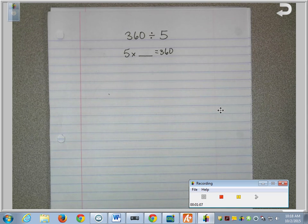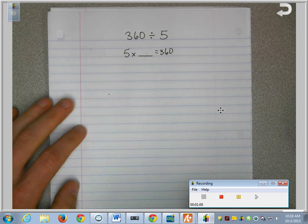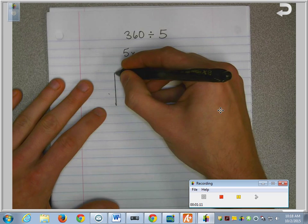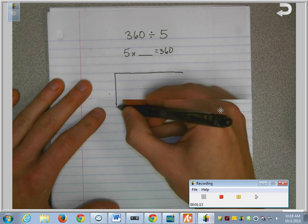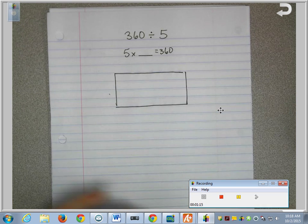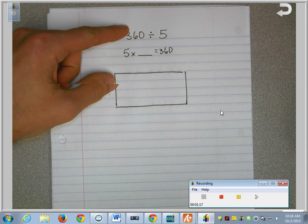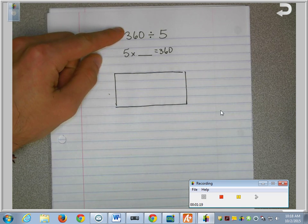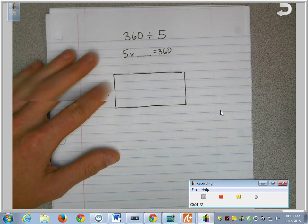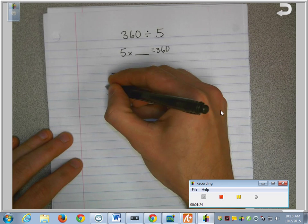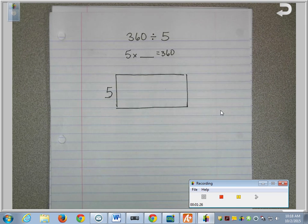So we're going to start off by making an unmarked array, which is just a big rectangle, a big empty rectangle. And what this array represents is the number that we're dividing. So this array represents our total of 360. And on the outside, I'm going to put our divisor, the 5. That's the number we're dividing it by.